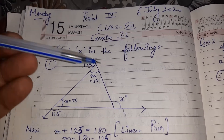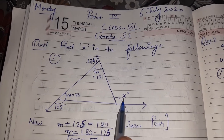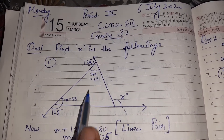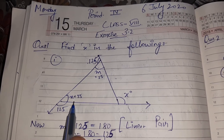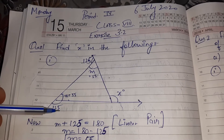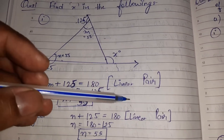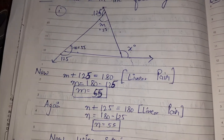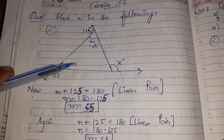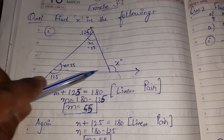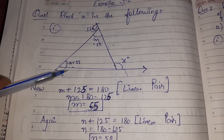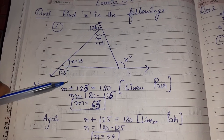We have to find the value of X in the following. I have taken two angles M and N by my own. This is 125 and this is 125. I have applied the linear pair concept: M plus 125 is equal to 180. There is a straight line and another line is cutting it, so these are divided into two angles.